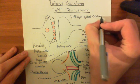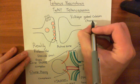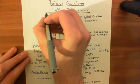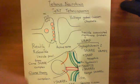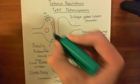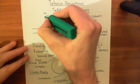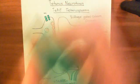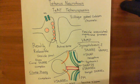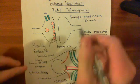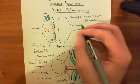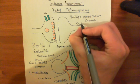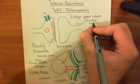Voltage-gated calcium channels consist of absolutely loads of subunits. The pore-forming subunit is known as alpha-1. There are many different genes in the human genome which code for alpha-1 subunits, and the alpha-1 subunits used in neuronal axon terminals come from the CAV 2.1 gene and the CAV 2.2 gene.